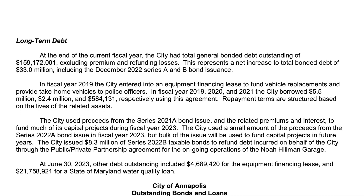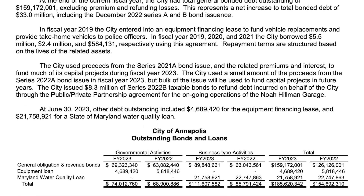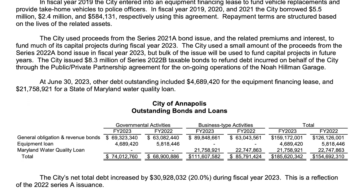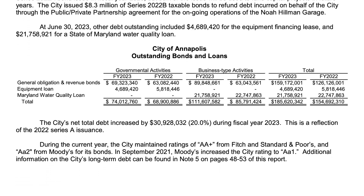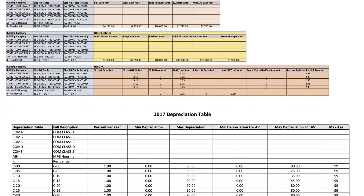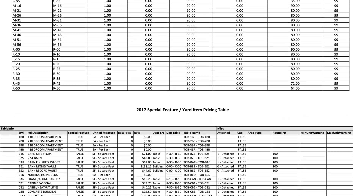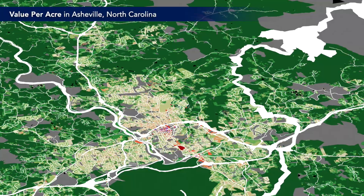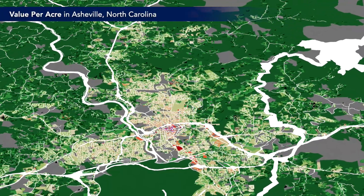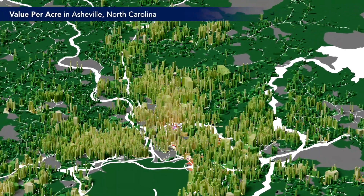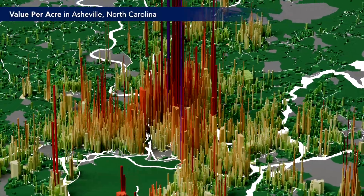Decision-makers and citizens don't have the full picture of what's going on in their cities, because the information is presented to them in a way that is too complex and laden with jargon, making it unintelligible to the average person. People have a limited capacity to read a 600-page tax document or municipal budget, and financial data shouldn't require hours of effort to decipher.